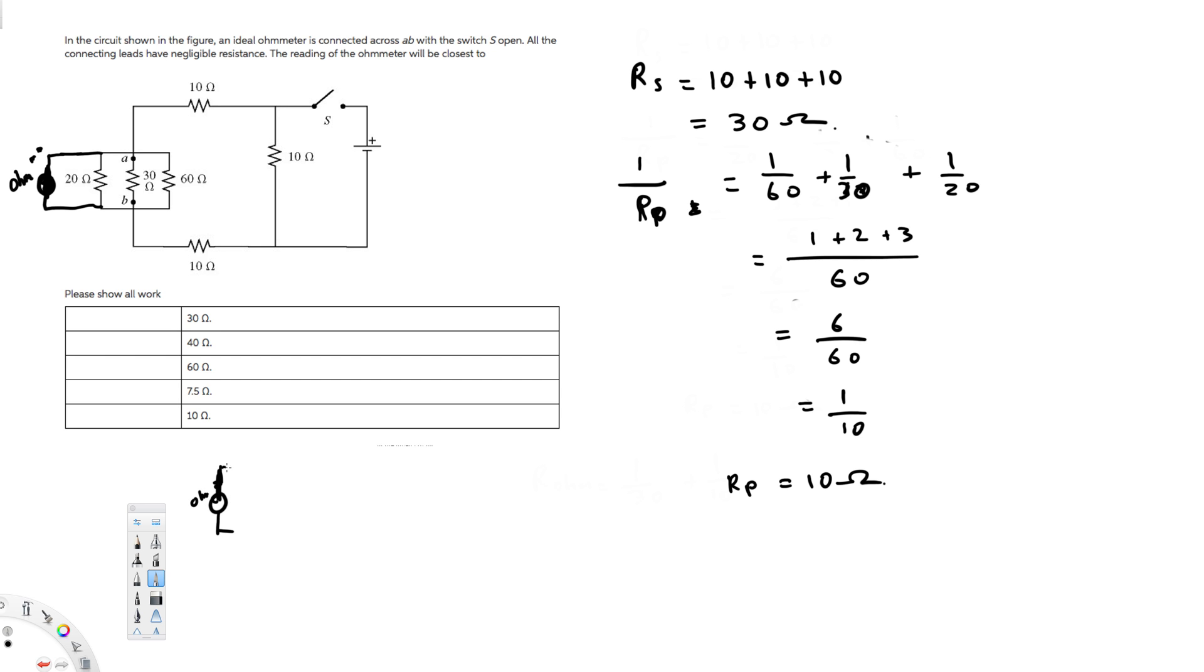Ohmmeter, and then we have this 30 ohm, and then we have this 10 ohm. So this is actually 10 ohm, this is 30 ohm. Right, so now the new connection is going to look like this.